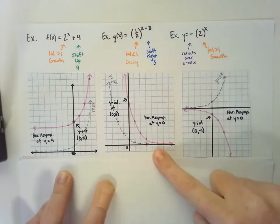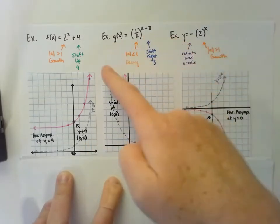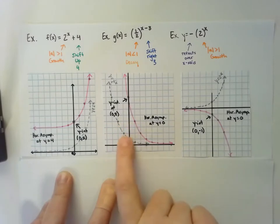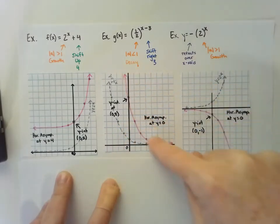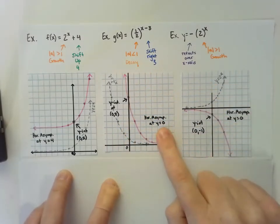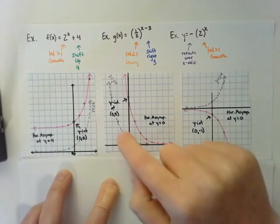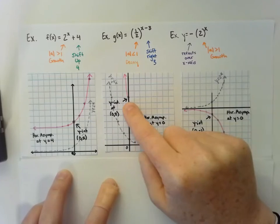In the second example, it's a decay function. In gray, I drew the basic parent function for decay. Then I shifted it all to the right 3 units and drew that one in pink. Notice my horizontal asymptote is staying the same for this one at y = 0, but my y-intercept did move up to (0,8).